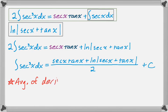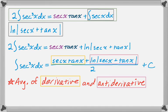And you might notice that it's just the average of the derivative of secant, which is secant x tan x, and the antiderivative of secant, which is the natural log of the absolute value of secant x plus tan x. So it's the average of those two things, which is kind of neat and makes it really, really easy to memorize.